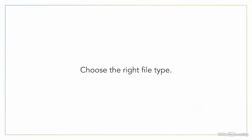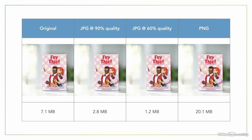So the first lesson is to choose the right file type depending on the type of asset that you're creating. Let's go back to the Frythief example. Most image editing tools have a quality setting for JPEGs, and you can often export at a lower quality — say 60 or 70% — and it's usually not noticeable at all. In this example, we went from 7.1 megabytes down to 1.2 megabytes at 60% quality, and it still looks great.